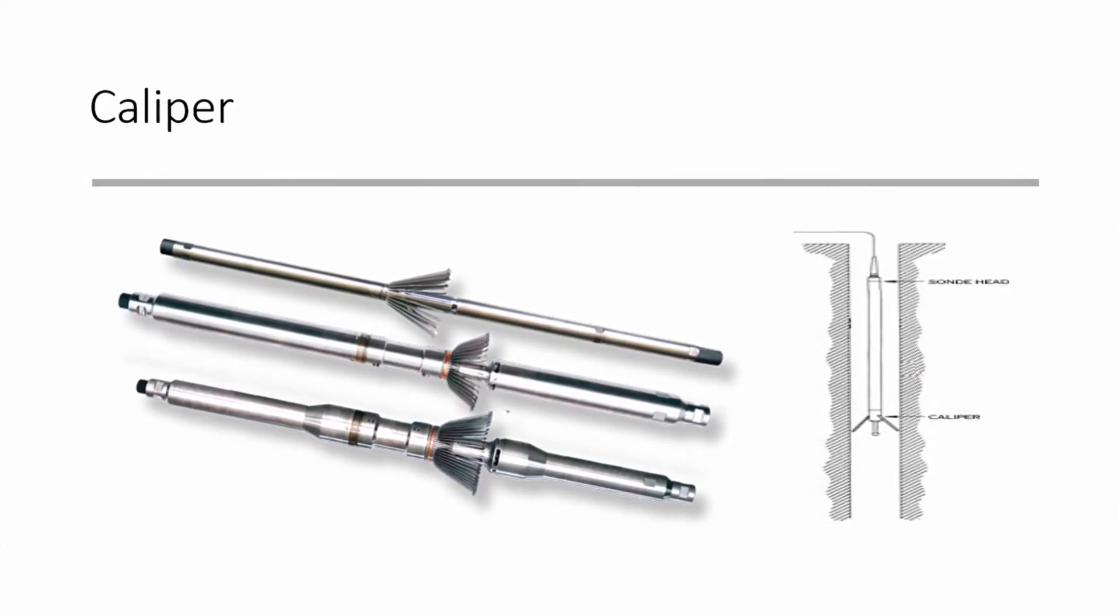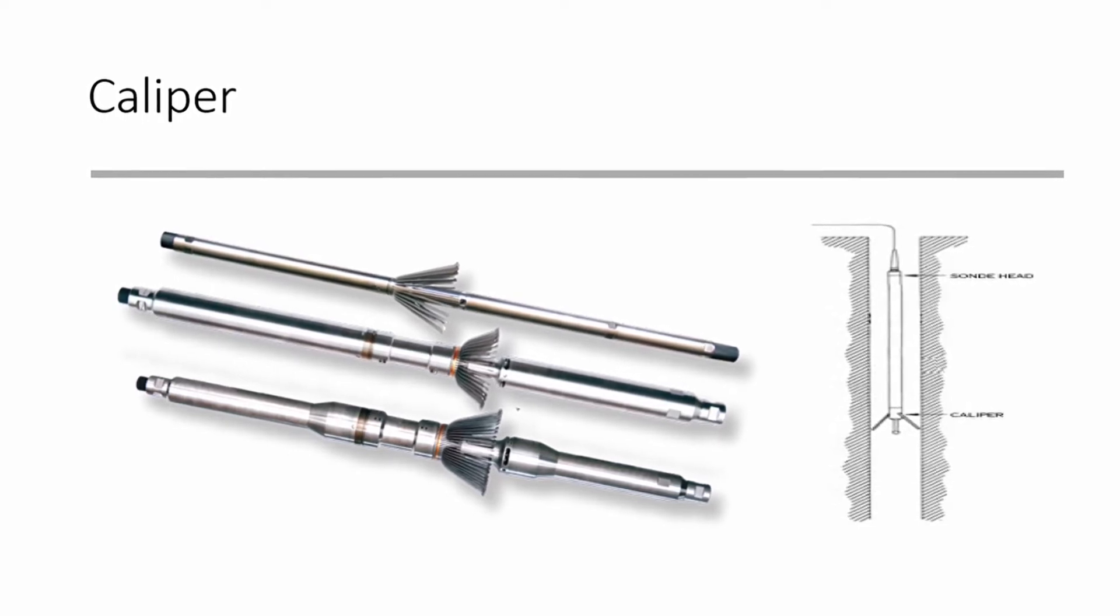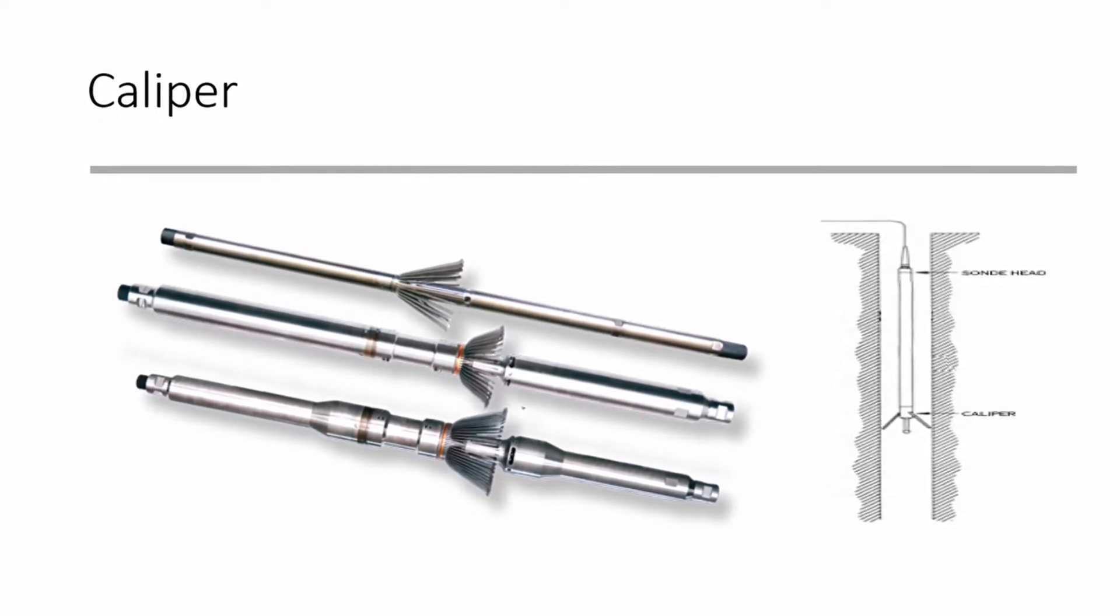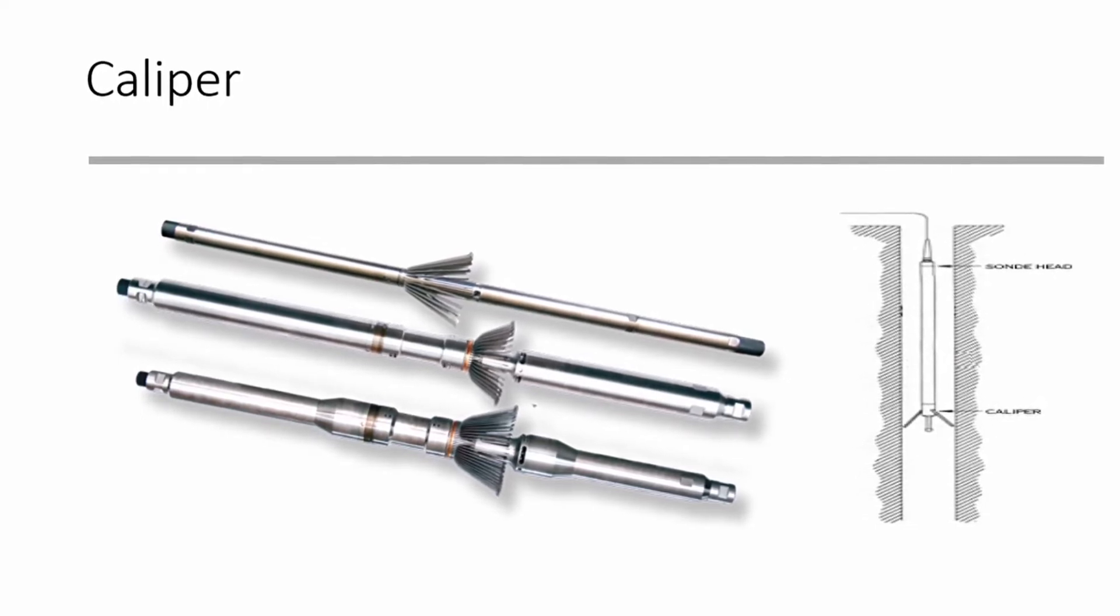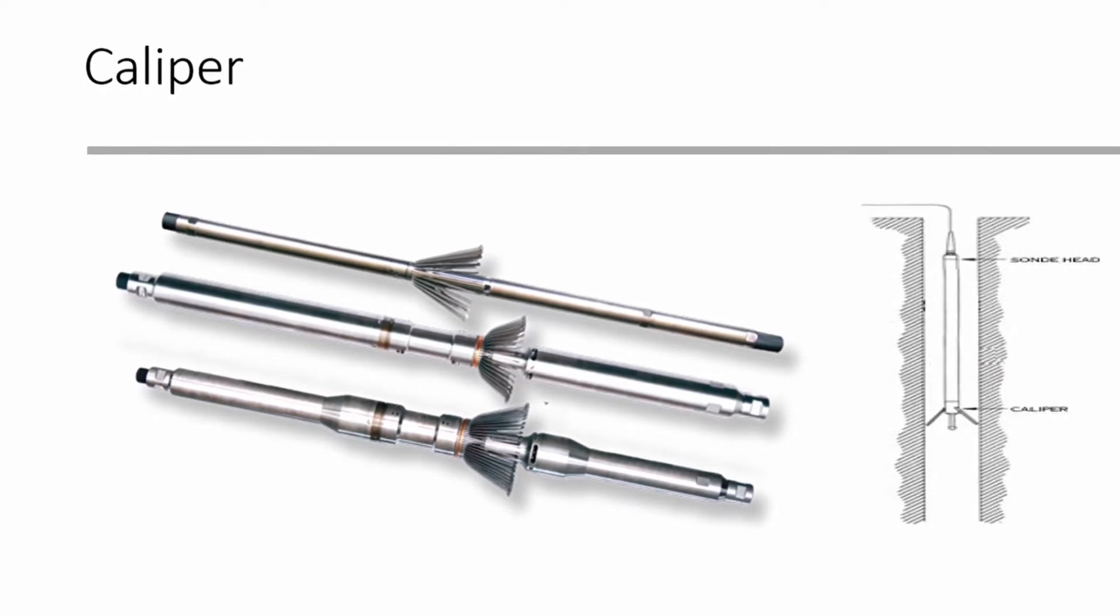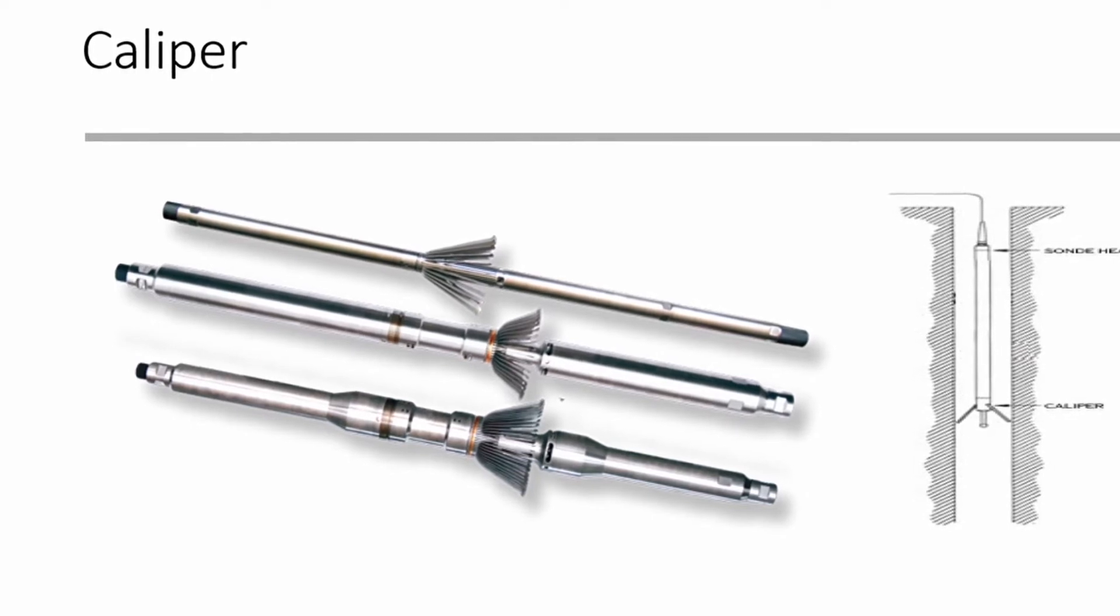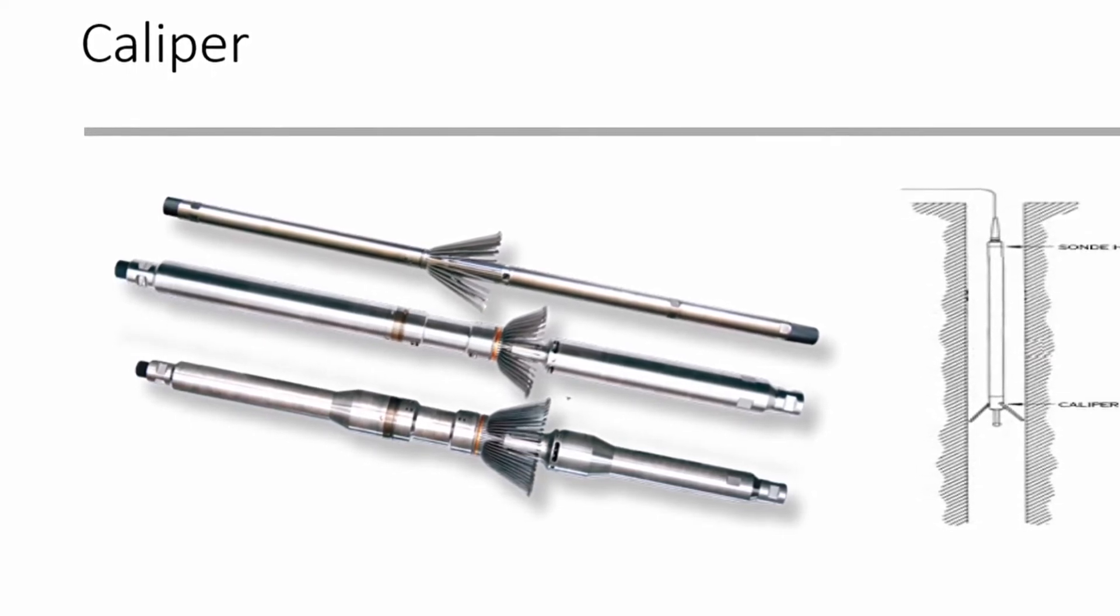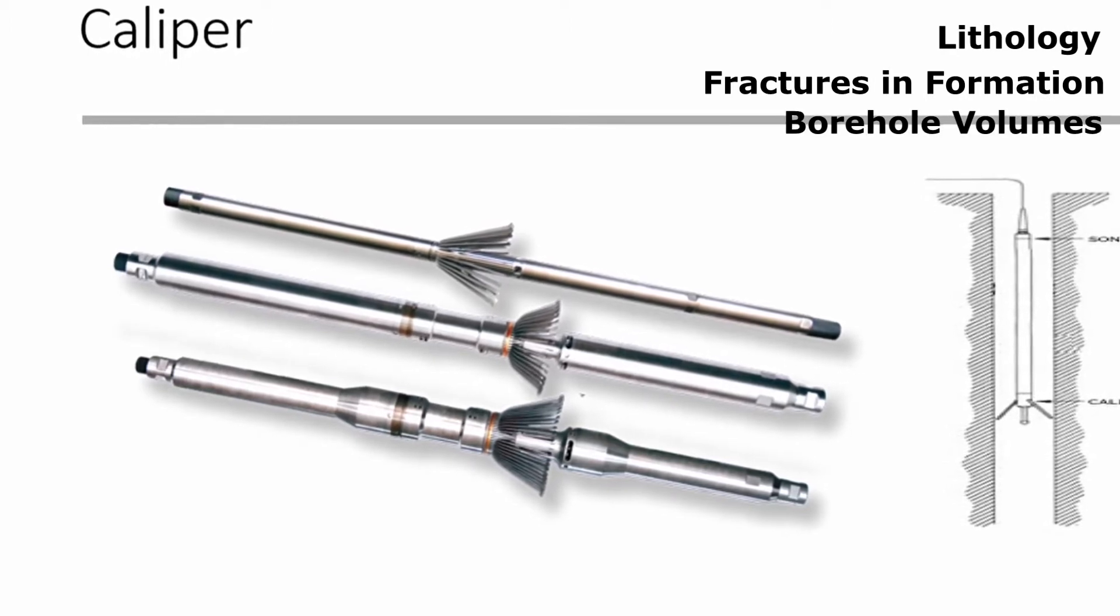Calipers are tools with multiple arms used to map borehole size and shape along the depth of the hole. Large deviations in hole diameter can limit measurement accuracy. These instruments are used to make corrections on hole diameter for other logs which can affect results of other logging techniques. Caliper logs are also used to identify characteristics of lithology, fractures in formations, and borehole volumes.